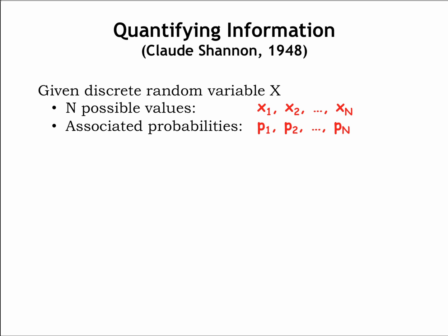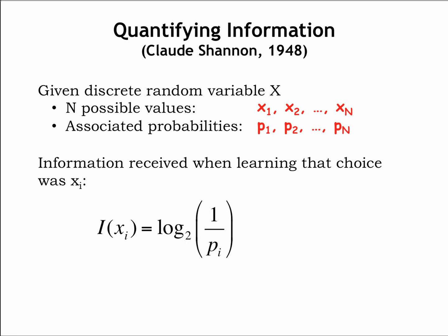The smaller the probability, the more uncertain it is that x will take on that particular value. Claude Shannon, in his seminal work on the theory of information, defined the information received when learning that x had taken on the value xi as the log base 2 of 1 over pi.